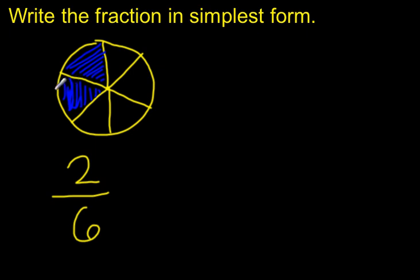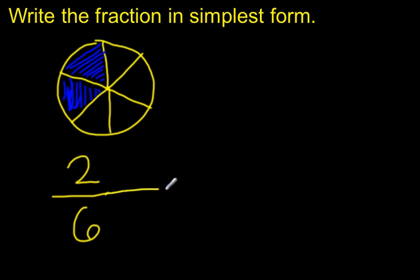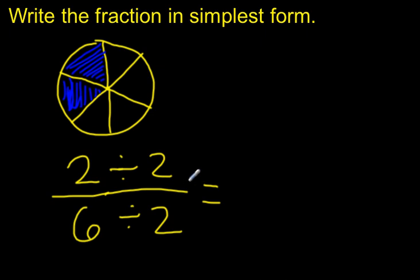You'll remember from the previous video, you get more pieces if you multiply your numerator and denominator. But if I want simplest form, I want the fewest pieces, so I don't want to multiply — I want to divide. Looking at my numerator and denominator, 2 and 6, I want to see if there's a number I can divide both of them by. I notice they're both even, which means they're divisible by 2. So I'll divide my numerator by 2 and my denominator by 2 as well.